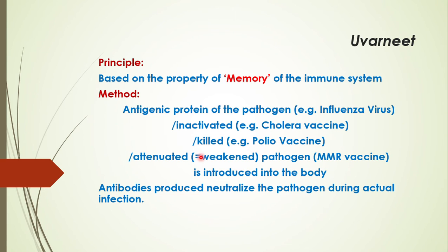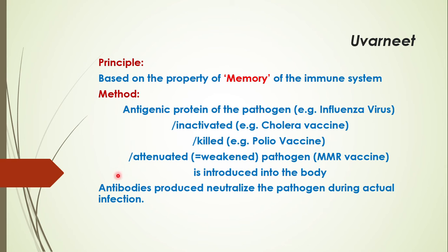You take the antigenic protein in any one of these four types and introduce it into the human body. The body will develop antibodies that are very specific, because the immune system has a very good memory. These antibodies will neutralize the pathogen during actual infection. So when that healthy man later encounters that particular pathogen, he will activate these antibodies to eliminate it.